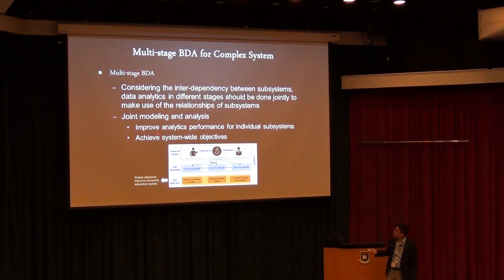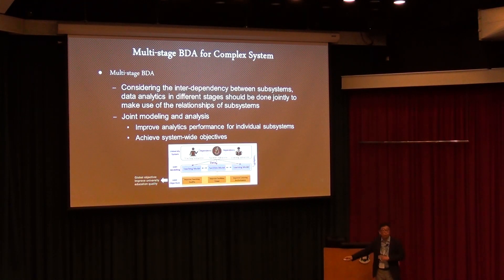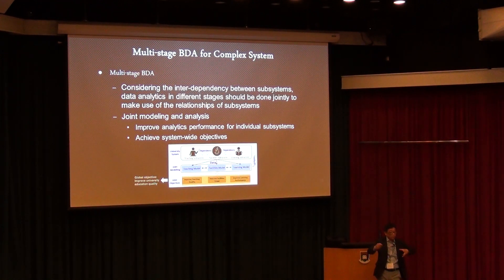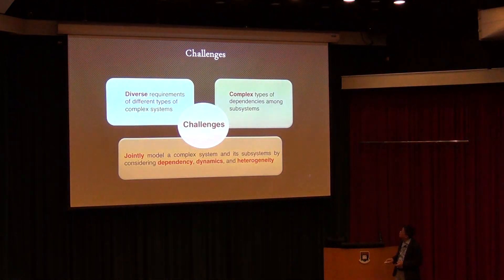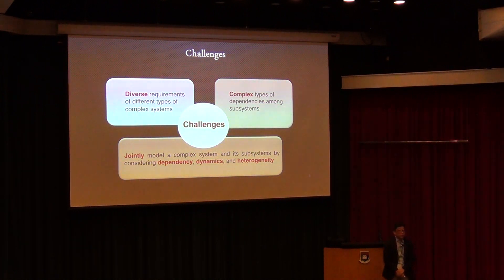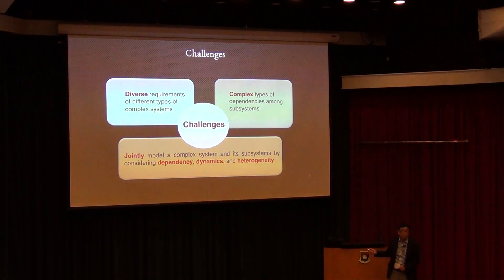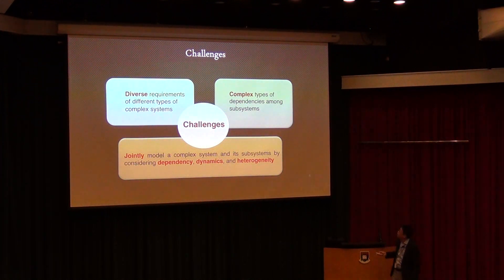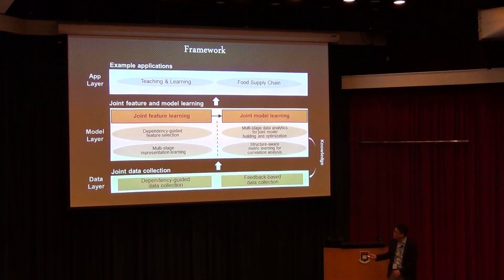We call this multi-stage big data analytics. The main purpose is joint modeling and joint analysis. The benefit is improved analytic performance of individual subsystems by leveraging information from other subsystems, and achieving system-wide objectives. The challenges come from different requirements of subsystems, different relationships between them, and different kinds of dependencies and correlations — studying how to jointly model the system with its subsystems is the main challenge.